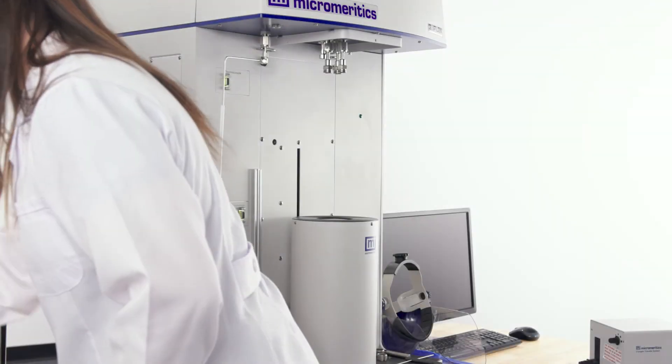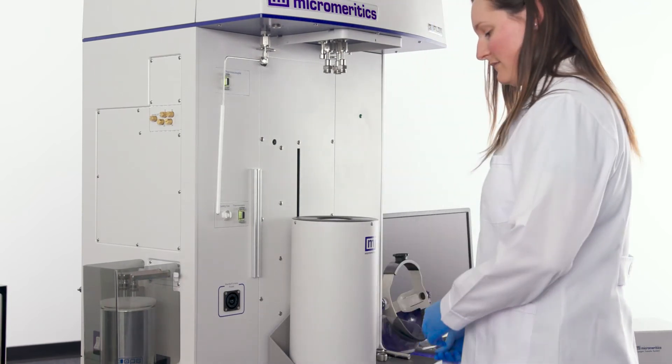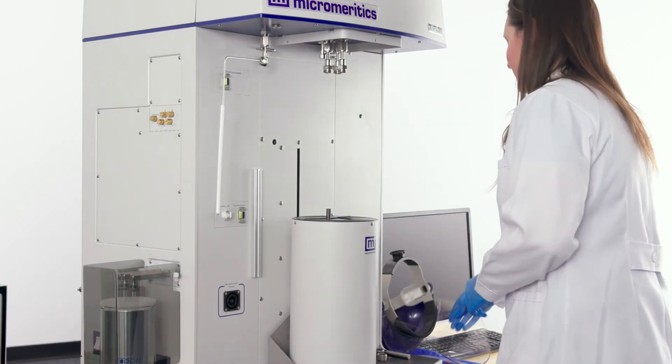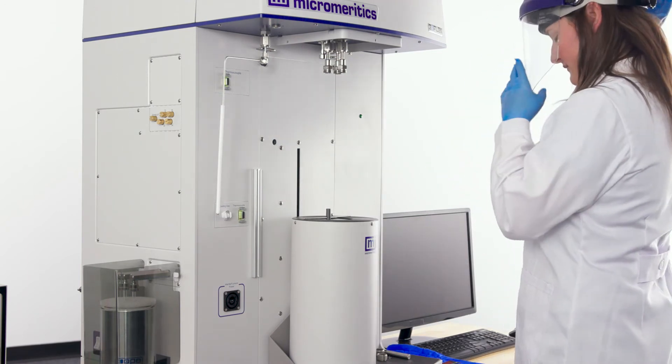Before attaching the sample tube to the instrument, fill the doer with liquid nitrogen on the elevator. Place the dipstick on the opening of the doer to use as guidance for the cryogenic liquid level.